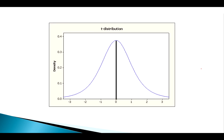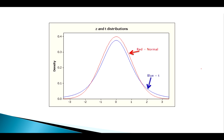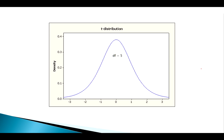Here is the Z centered at zero and the T centered at zero, overlaid. The red curve is the normal Z distribution and the blue is the T distribution. This particular T curve has five degrees of freedom.